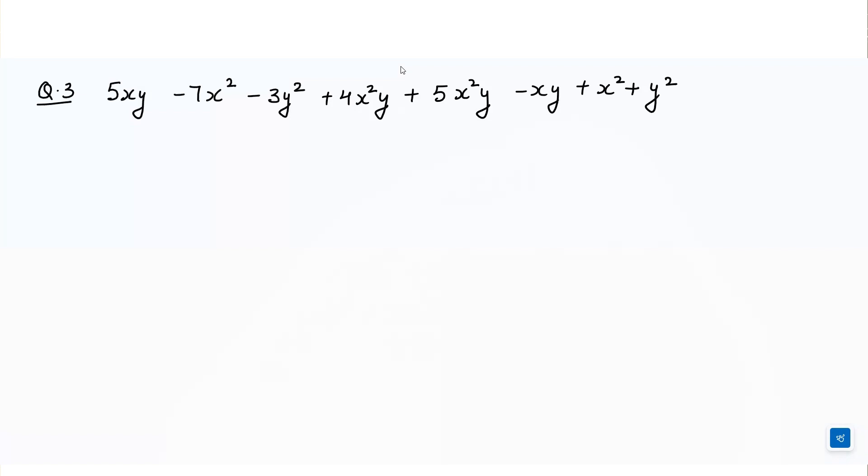So we have to write down the like terms together. 5xy minus 1xy minus 1xy minus 7x square plus 1x square minus 3y square plus 1y square plus 4x square y plus 5x square y. Now, we will solve it.